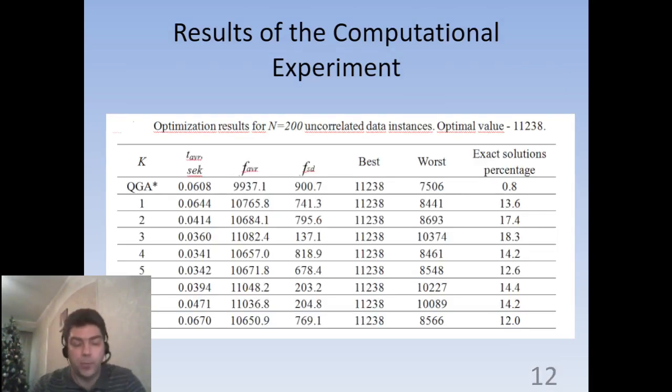This table represents the statistical results of our computational experiments: the mean value of the best individual, standard deviation, the best and worst absolute results, average time, and the percentage of exact solution are presented here. The first row in this table is QGA with the asterisk, and this is a regular quantum algorithm with qubit binary representation of an individual.